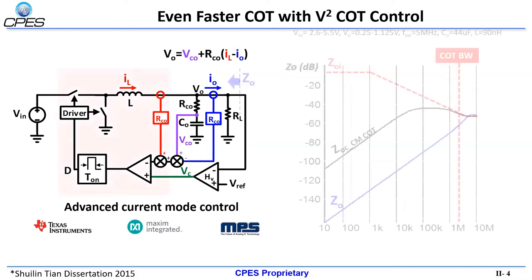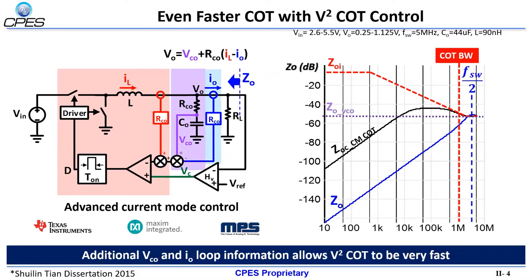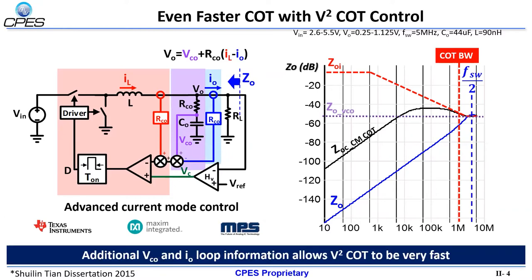By comparing the output impedance of the two control methods, it is clear that the v-square constant on-time control has a lower output impedance due to the additional capacitor voltage and output current loop, and thus is a faster control method.